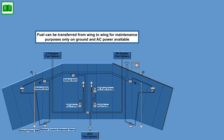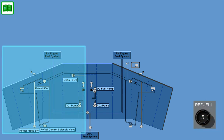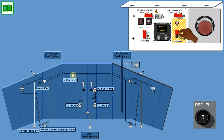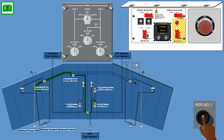Fuel can be transferred from wing to wing for maintenance purposes only on the ground and with AC power available. To transfer fuel from the right-hand tank to the left-hand tank, the refuel one circuit breaker has to be pulled. This will de-energize the left refueling control system and allow the fuel pressure to open the left refuel shutoff valve. Open the defuel valve on the refuel-defuel panel, then select the AC pump 2 switch to auto and the cross-feed switch to low 1. Fuel will now be transferred to the left tank. When the desired fuel transfer is finished, move the respective switches to off or closed and reset the circuit breaker.